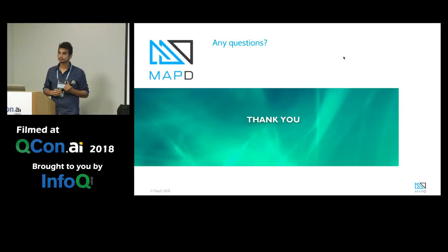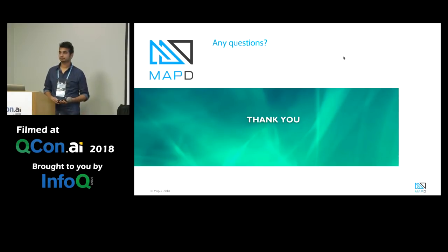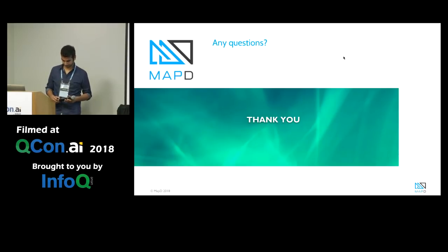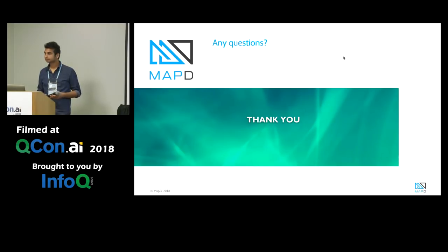We recently launched our product in the cloud. You can go to mapd.com/cloud and get your own GPU in the cloud with the MapD software installed — no credit card required. You get a free trial of about 14-15 days, and we also have pre-loaded datasets. The taxi example I just showed is available there too. You can also bring your own dataset through S3; we have instructions for that.